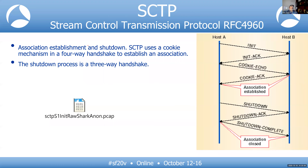An association or stream is established using a four-way handshake, whereas TCP uses three-way — so SCTP is one better. The shutdown process uses a three-way handshake. We'll cover each of those messages.